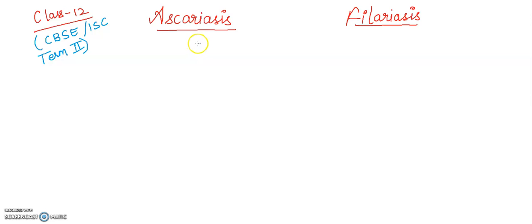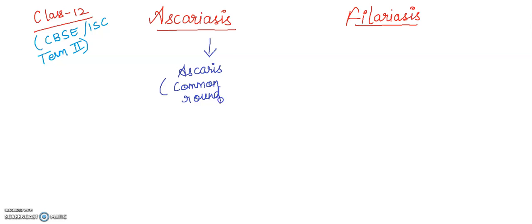What exactly is Ascariasis? This is a disease caused by the common roundworm, which is known as Ascaris. These are among the helminthes which are known to be pathogenic, and Ascaris is an intestinal parasite.